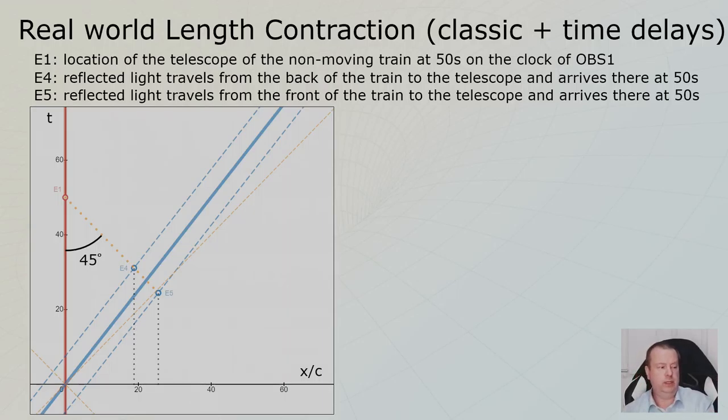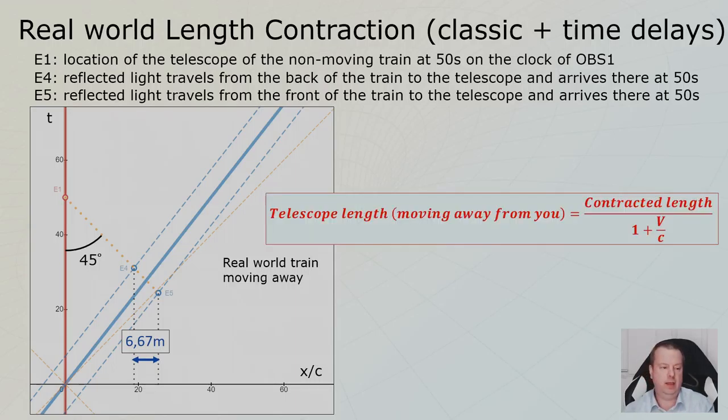And then you will see that if you took a picture and you know what the location is of event number four and you know what the location is of event number five, you will not see 12 meters. You will see 6.666. A real world train moving away from you is even smaller than the classic length contraction. And you can calculate it by taking the already contracted length and divide it by 1 plus v over c, which is in this case 0.8. 1 plus 0.8.